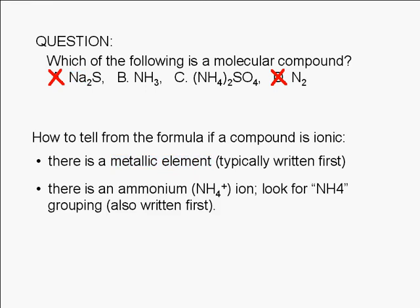If we don't see a metallic element, the compound can still be ionic if we see an ammonium ion. We look for an NH4 grouping in the formula.